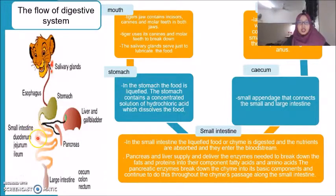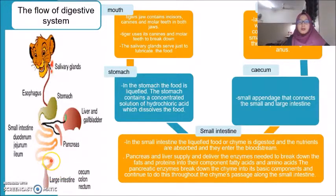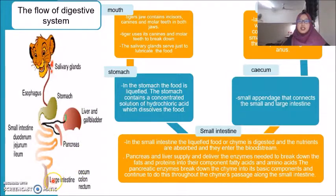In the small intestine, the liquefied food, or chyme, is digested and the nutrients are absorbed and enter the bloodstream. The pancreas and liver provide the enzymes needed to break down fats and proteins into fatty acids and amino acids. The pancreatic enzymes break down the chyme into basic components and continue processing along the small intestine. Then it goes to the cecum, which connects the small intestine and large intestine, and lastly to the large intestine, which allows water to escape and compacts what remains into a mass expelled through the anus.